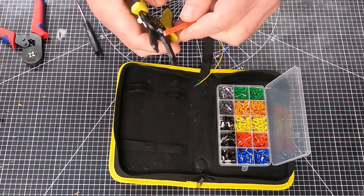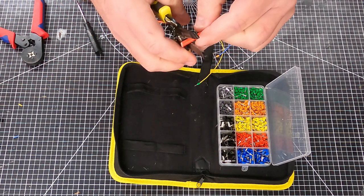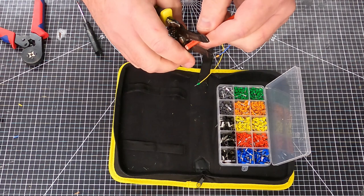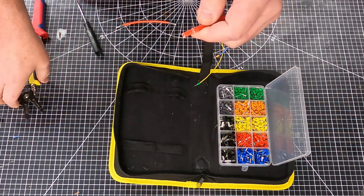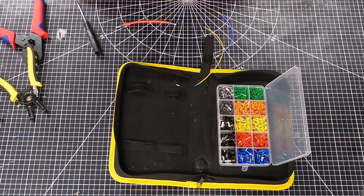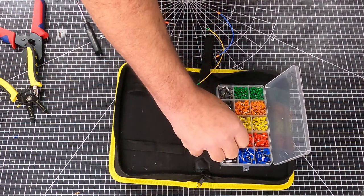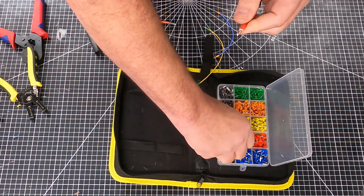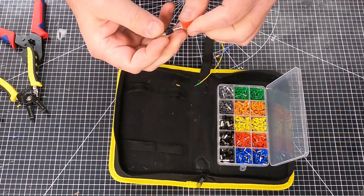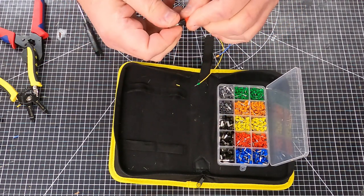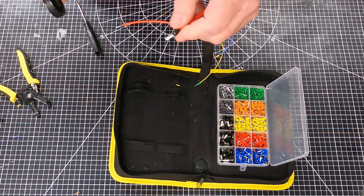This is the other extreme of this kit—a 10 gauge. A 10 gauge will take the black terminal. Put that on there like that, give it a crimp.